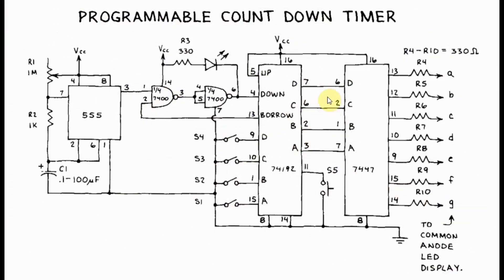The 4-bit count value is then applied into the 7447IC which is a common anode 7 segment driver. And the output segments are then connected to a common anode 7 segment display.